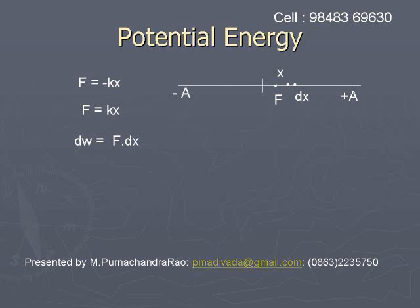If this force displaces the particle by a small distance dx, then the work done by this force equals F dx. So the small work done, dW, will be equal to kx dx. But k is equal to m omega squared. Hence dW is equal to m omega squared x dx.